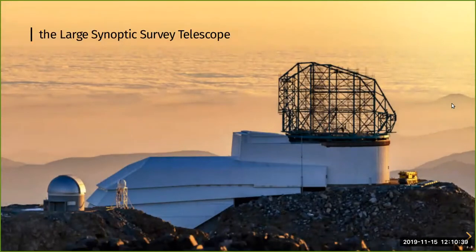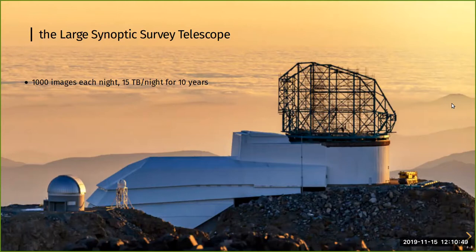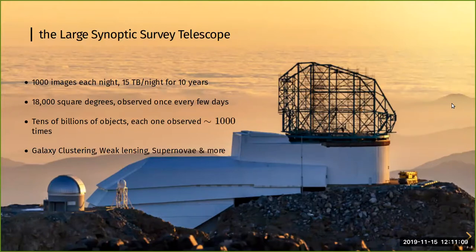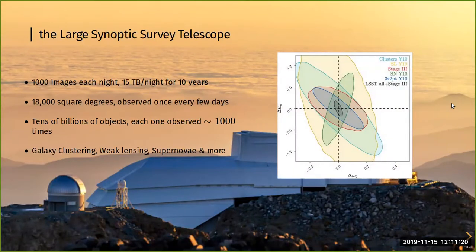Next we have LSST, the Large Synoptic Survey Telescope — the largest survey ever done. It will take 1,000 images each night generating 15 terabytes of data per night for 10 years, covering 18,000 square degrees, observing the entire sky once every few days. That gives you 10 billion objects each observed a thousand times. The precision will be huge, enabling galaxy clustering, weak lensing, and many other science cases. The dark energy constraints shown here illustrate the potential of these surveys.